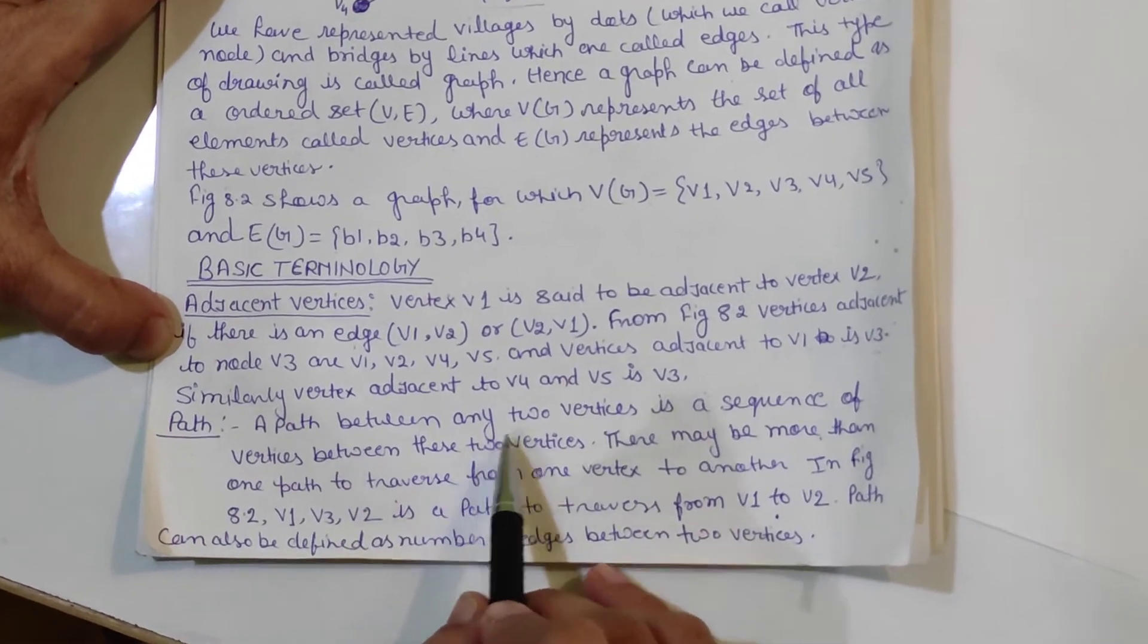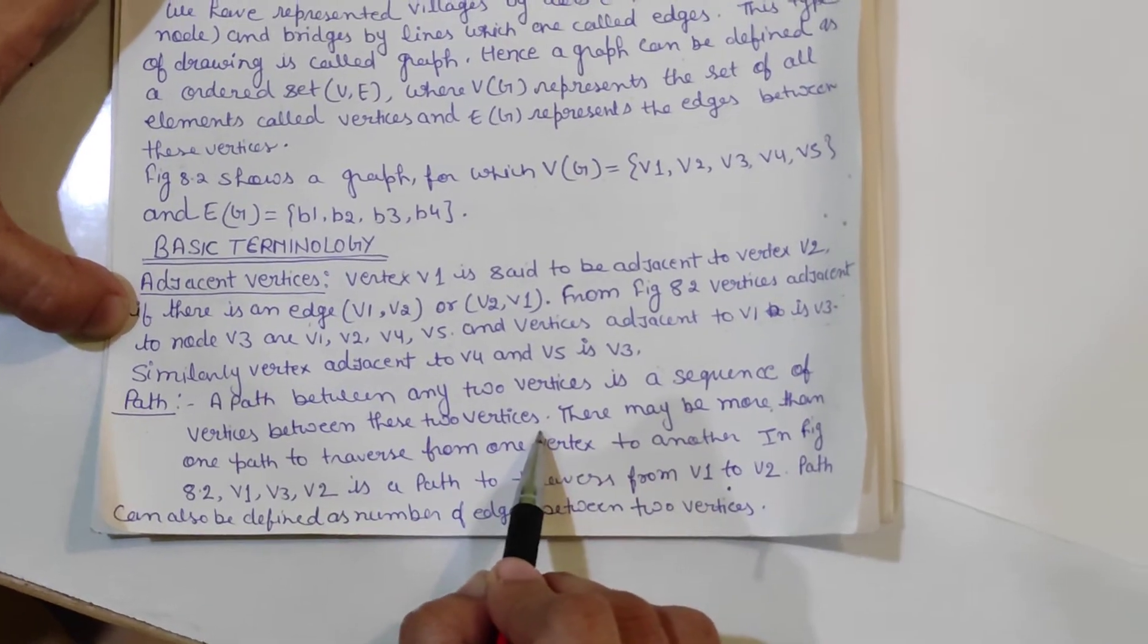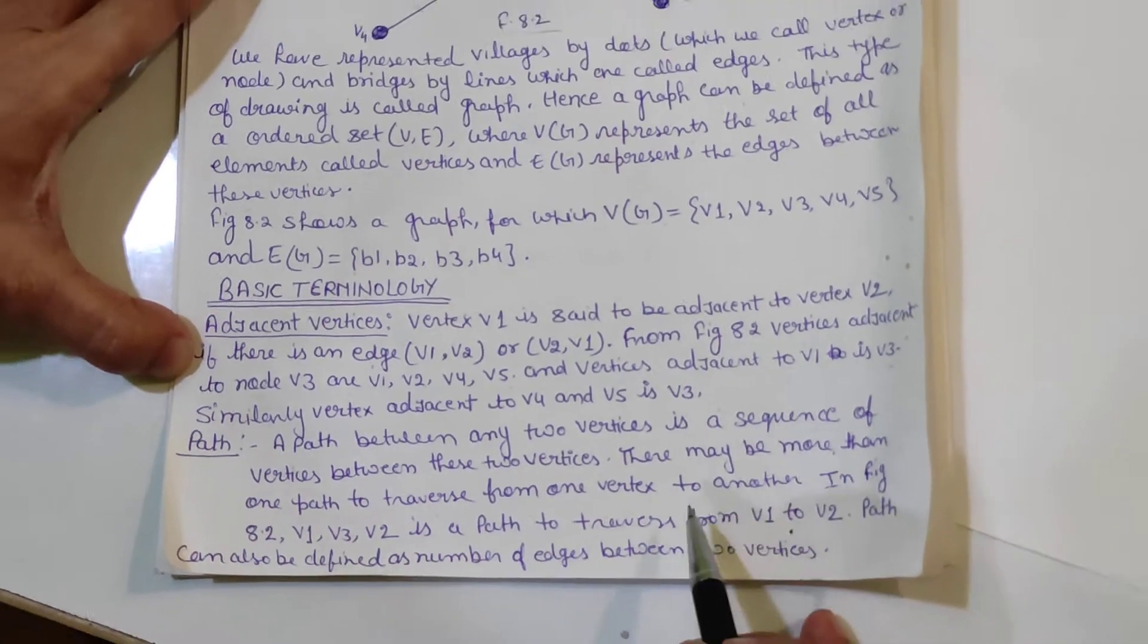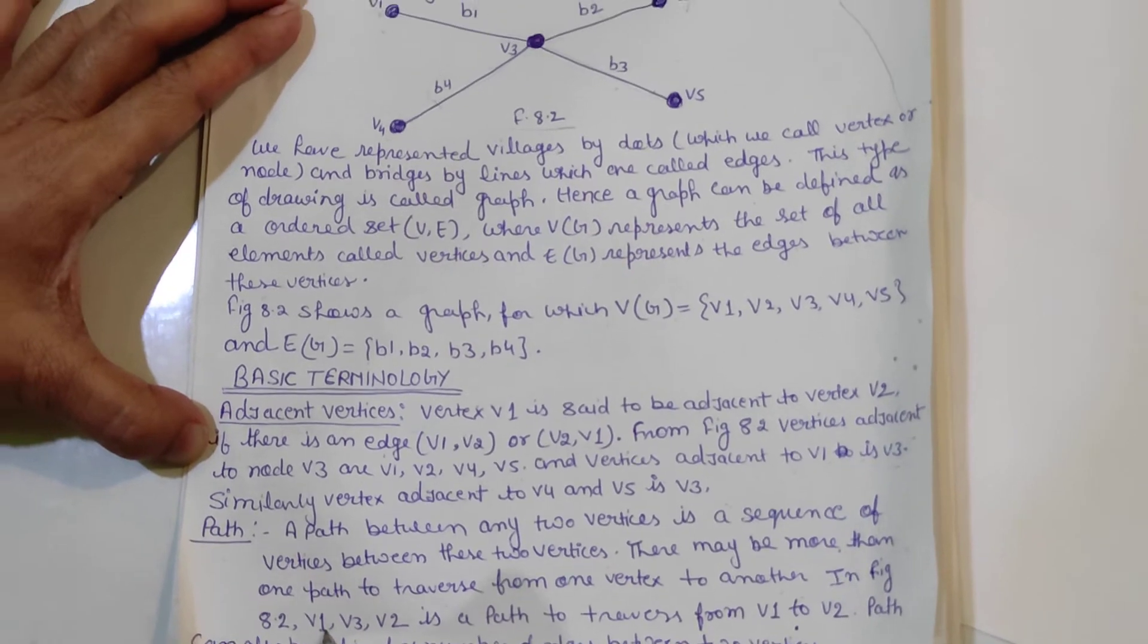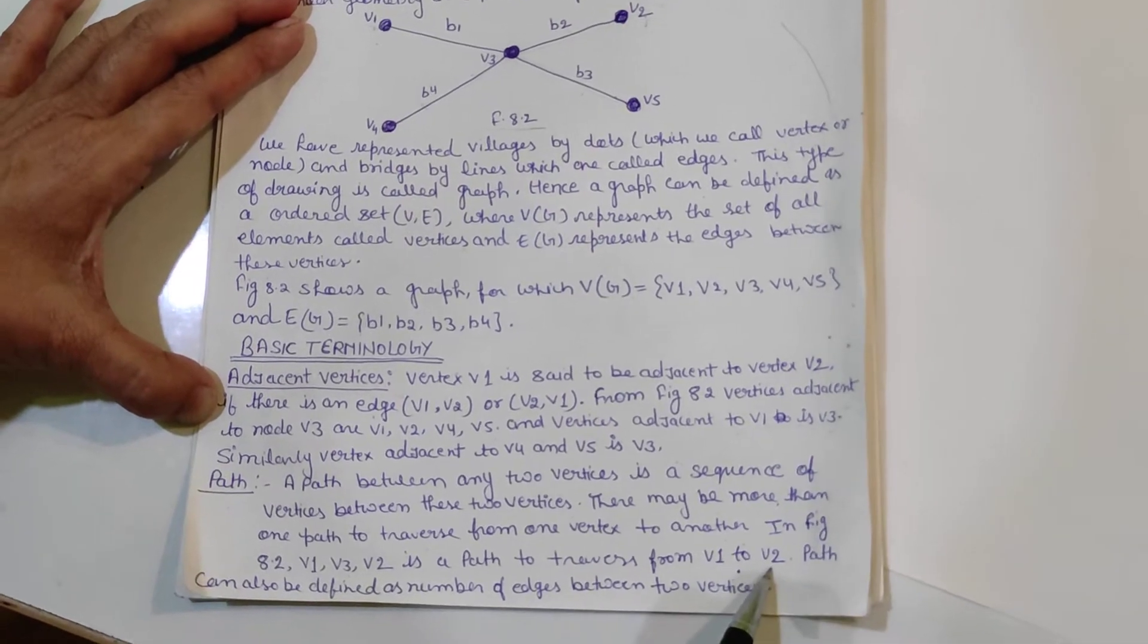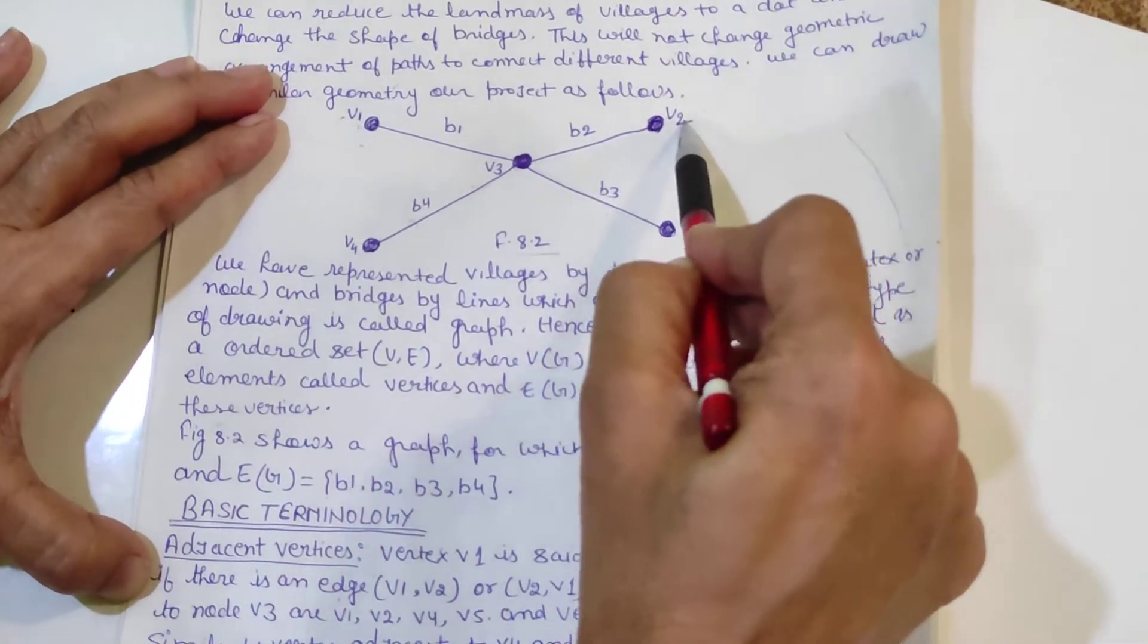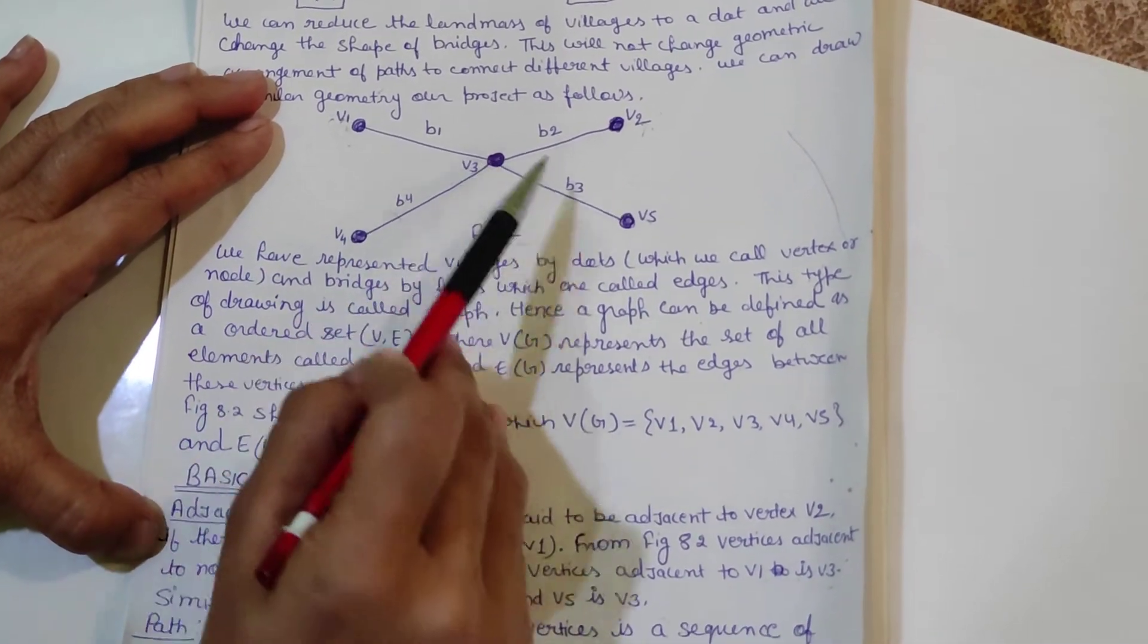Path: A path between any two vertices is a sequence of vertices between these two vertices. There may be more than one path to traverse from one vertex to another. In figure 8.2, V1, V3, V2 is a path to traverse from V1 to V2. If we want to go from V1 to V5, then V1 to V3 and V5.